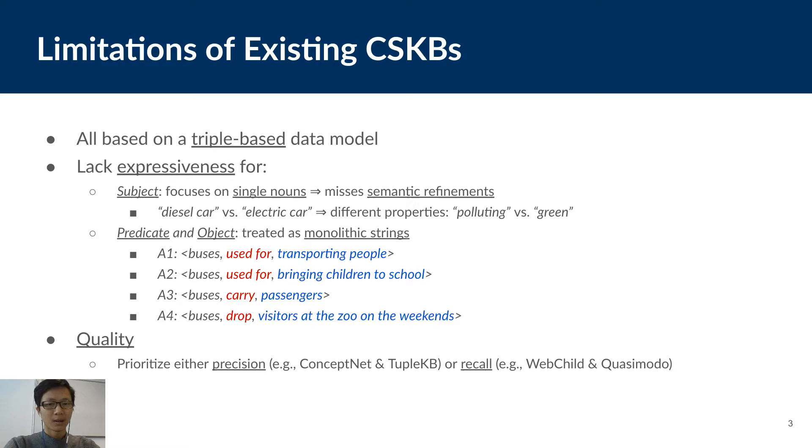Existing common sense KBs can be divided into two categories, the manually constructed KBs and the extraction-based KBs. And despite using different construction methods, all those KBs come with some major limitations. First, they are all constrained by a triple data model which has a problem that triples are often found to be overly specific and wordy. Second, they lack expressiveness for both subject, predicate, and object. For subjects, they mostly focus on single nouns like elephant, trunk, car, and miss out semantic refinements of those subjects, which may have different or even opposite properties.